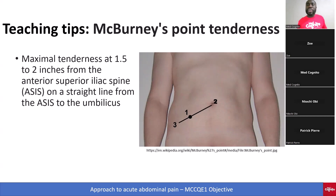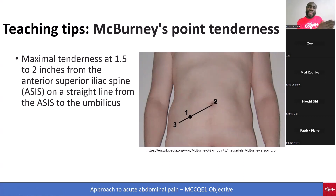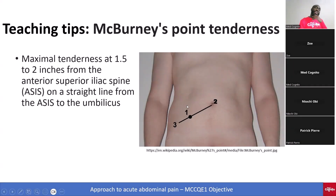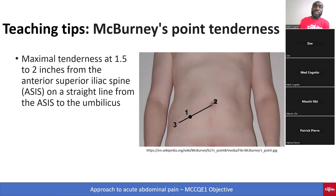McBurney's point tenderness is found by looking at the belly button and locating the anterior superior iliac spine. One-third the distance from the anterior superior iliac spine to the umbilicus is where we get McBurney's point. If you are examining the patient for acute appendicitis and the patient winces when you touch that point, that is McBurney's point tenderness. Please learn this well because in the mock exam you will be tested on it.